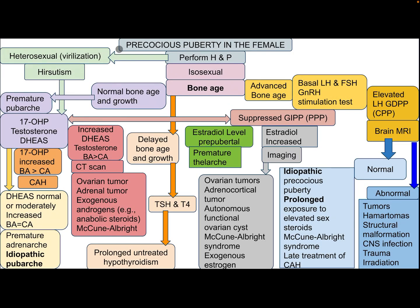After performing history and physical examination, the approach to a female with precocious puberty begins by determining if it is heterosexual, like virilization and hirsutism — which will be discussed in another lecture — or isosexual. For isosexual puberty, the patient needs a bone age assessment. If bone age and growth are normal, this is premature pubarche, and the patient needs 17-hydroxyprogesterone, testosterone, dehydroepiandrosterone sulfate, and estradiol levels.